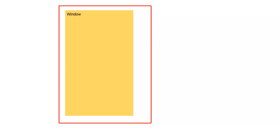Internally, whenever these controls are represented, you will notice they are represented as multiple controls in a hierarchy. We understood that there was Window, then Border, then AdornDecorator, then maybe StackPanel which was our element, then Border again and some more controls after this. Finally, after this entire hierarchy — at the 10th or 15th level — there was the TextBox.